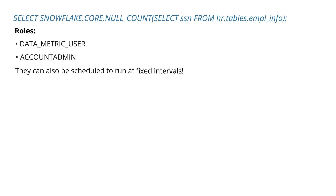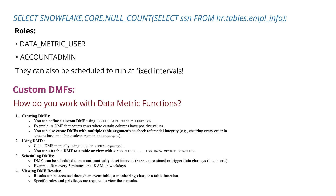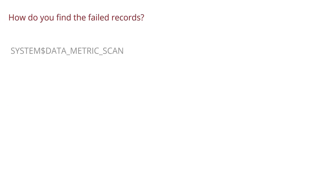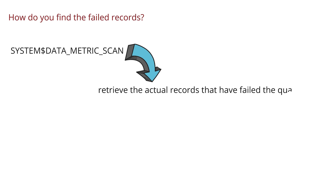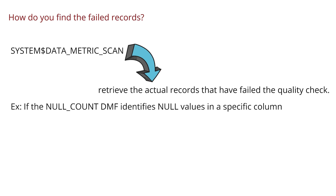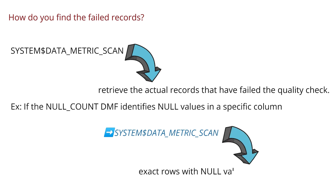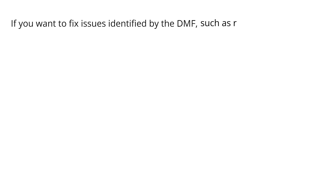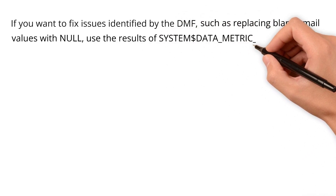They can also be scheduled to run at fixed intervals. For more advanced use cases, you can define custom DMFs. When issues are identified by a DMF, how do you find the failed records? The system data metric scan function can be used to retrieve the actual records that have failed the quality check. For example, if the null count DMF identifies null values in a specific column, you can call system data metric scan to obtain the exact rows with null values — not just the count. If you want to fix issues identified by the DMFs, such as replacing blank email values with null, you can use the results of system data metric scan in an update statement.